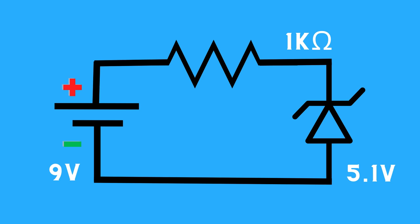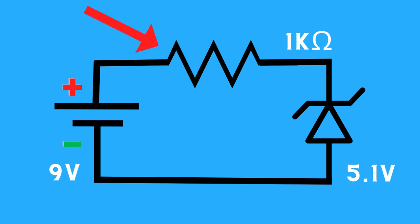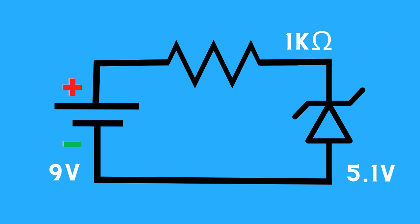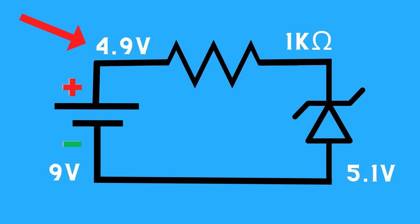Imagine you have a sensitive electronic device — you don't want it to experience a higher voltage than it can handle. That's where the zener diode comes in. It acts as a voltage regulator, clamping down voltage to a desired level. In our experiment, we have a circuit with a 9-volt battery, a 1000-ohm resistor to control the electrical current, and a 5.1-volt zener diode in reverse biased mode. The zener diode will maintain a voltage close to 5.1 volts regardless of increases in the power source.